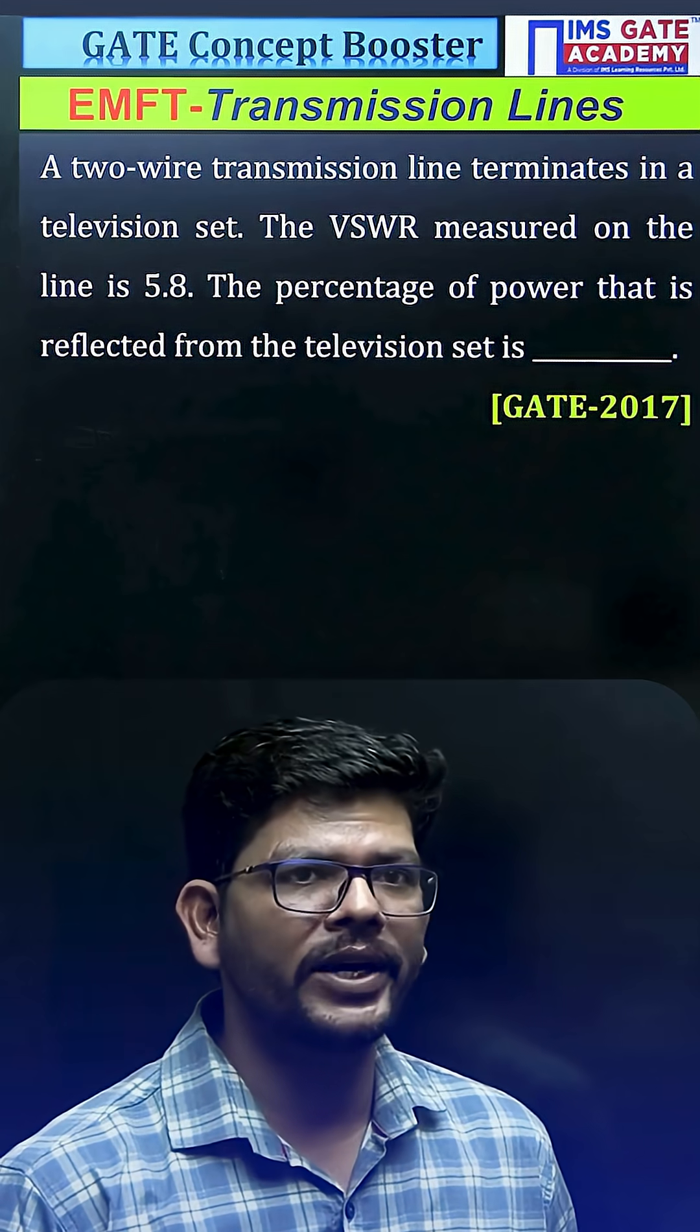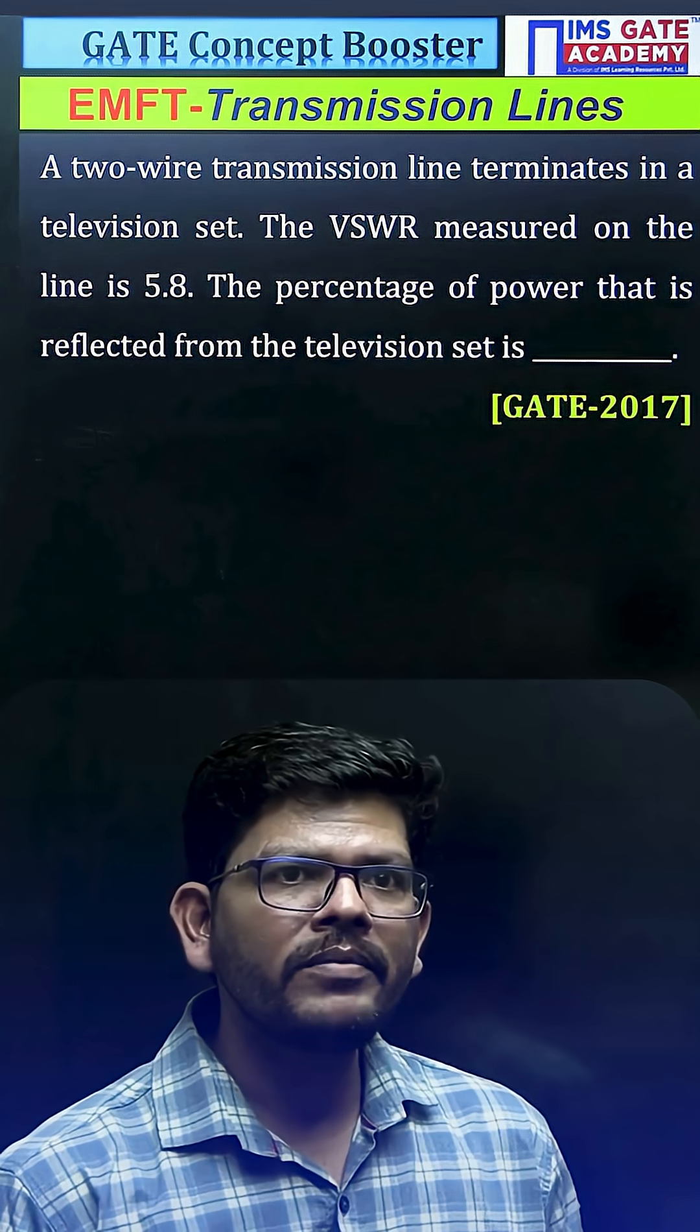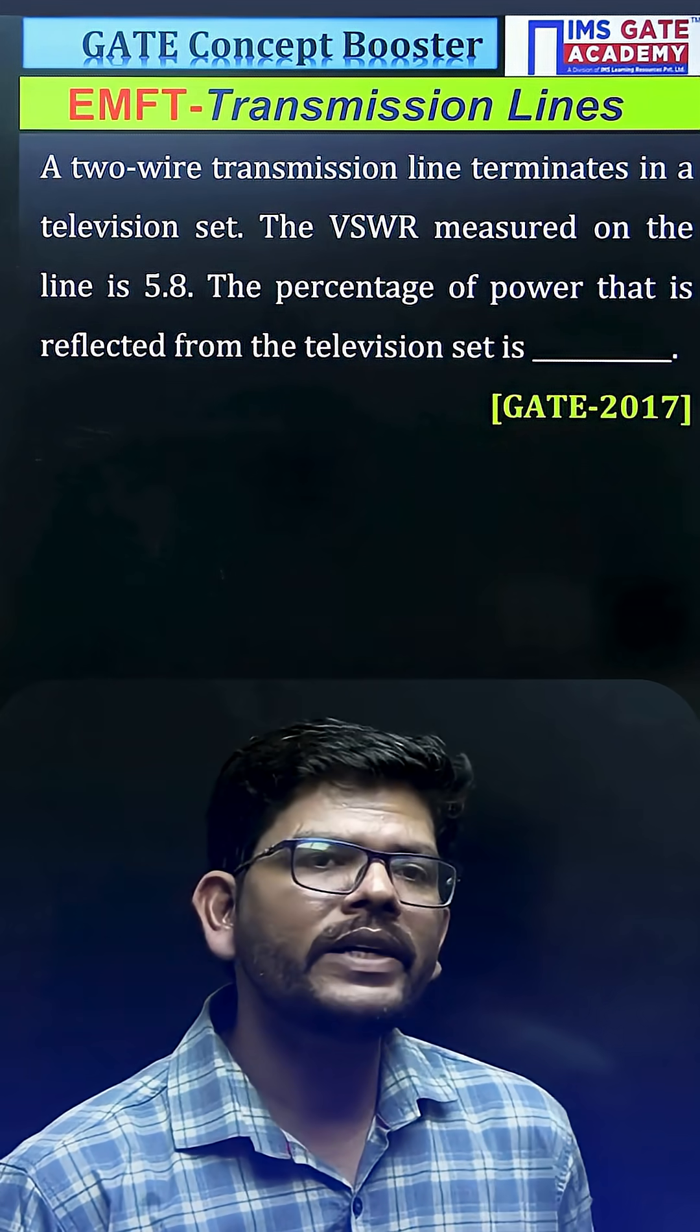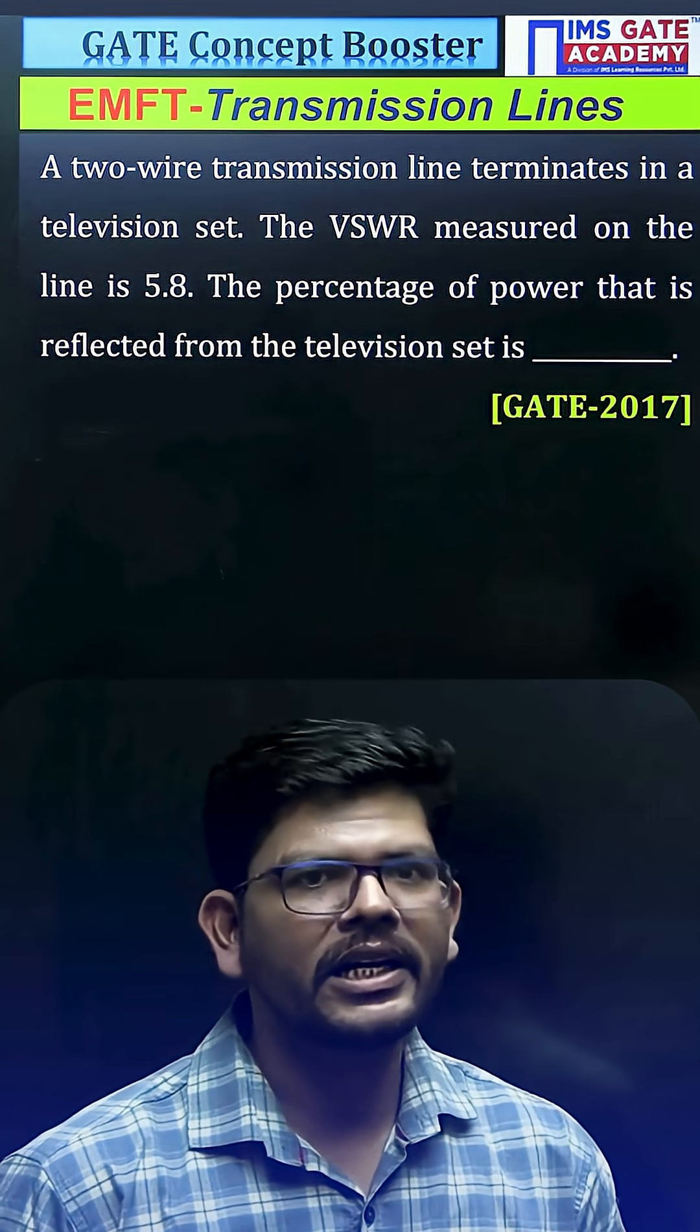The VSWR measured on the line is 5.8. What will be the percentage of power that is reflected from the television set in terms of incident power? Use that formula and comment your answer in the comment box.